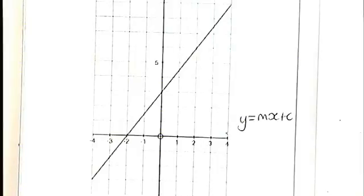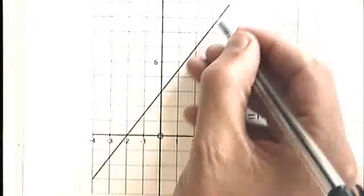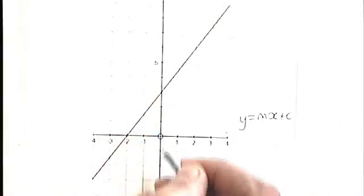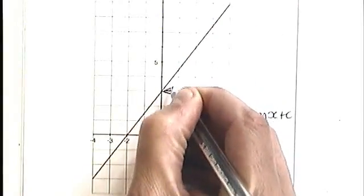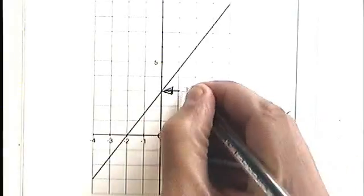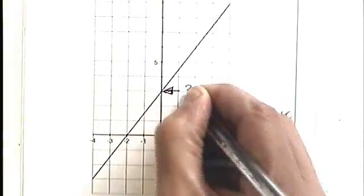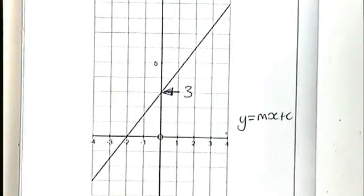So the two things we need to look for, where does the diagonal line cross the y-axis, that's the y-intercept. There we are, it's at 1, 2, 3. The y-intercept is equal to 3.